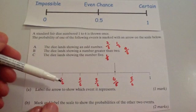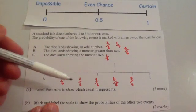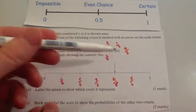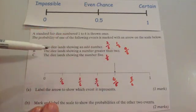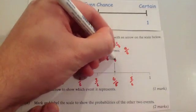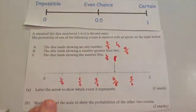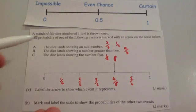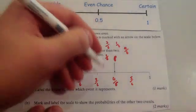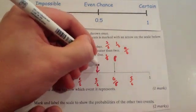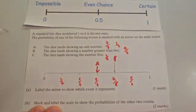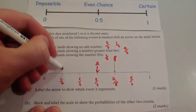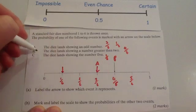Label the arrows showing which event each represents. The 4 out of 6 arrow represents B — the dice showing a number greater than 2. Then mark A (one half, or 3 sixths) and C (1 sixth, showing the number 5) on the scale at their correct positions.